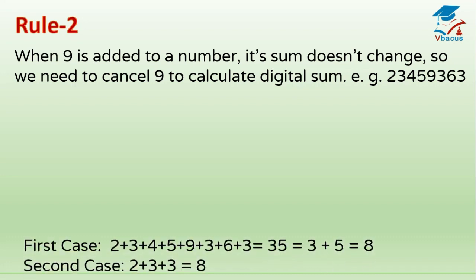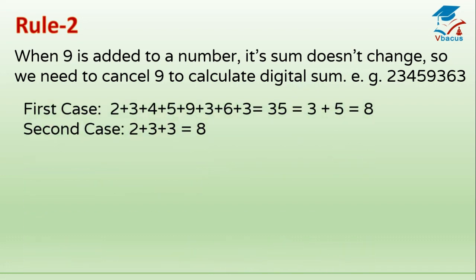In the first case, if you add all the digits together it becomes 35, then 3 plus 5 equals 8. In the second case, cancel 9 directly: 4 plus 5 is 9 — cancel them; cancel the 9; 3 plus 6 — cancel them. The leftover digits are 2, 3, and 3, so 2 plus 3 plus 3 equals 8.